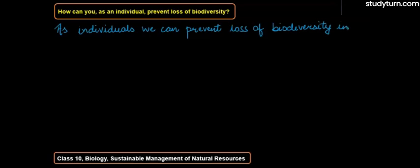As an individual, we can prevent loss of biodiversity. What is biodiversity? Biodiversity is the different types of living organisms which are living around us in the environment. So, different types of living organisms present in the environment — that is biodiversity.